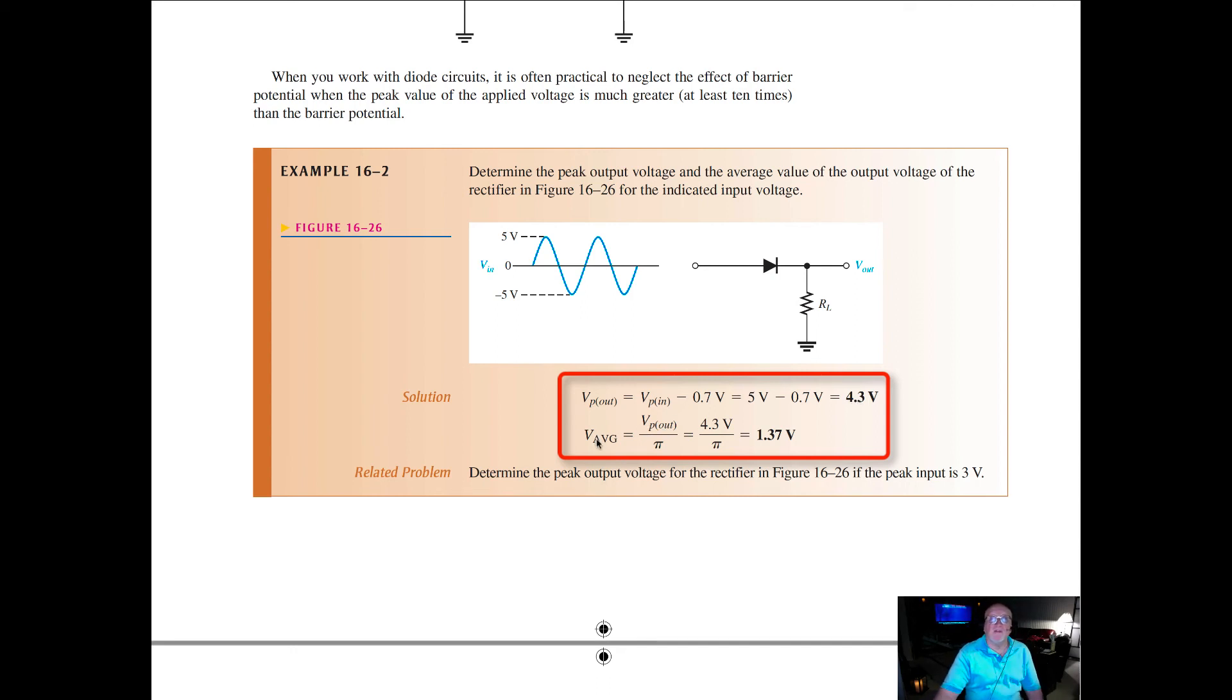Once we get 4.3 as the peak output, then we can find out what the average is by taking that value, 4.3, dividing it through by pi, and we get 1.37 as the output voltage. It does become significant for this small voltage because, in this case, seven-tenths of a volt is almost one volt, so it is significant.